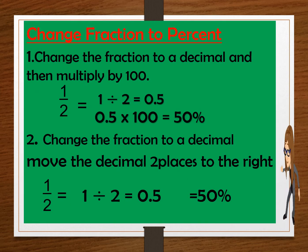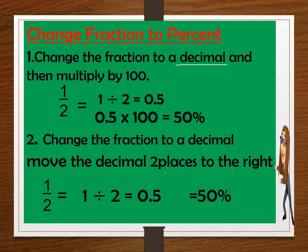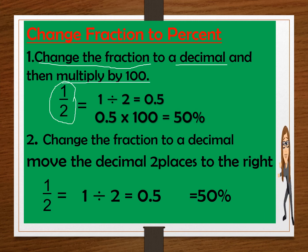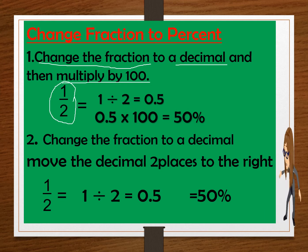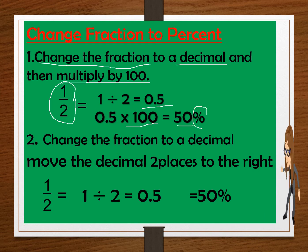To change fraction to percent, number one: change the fraction to decimal, then multiply it by 100. So we have 1 half. Divide 1 by 2, that is 0.5 or 5 tenths. Then we multiply the decimal by 100, so the answer is 50. And then put the percent sign.